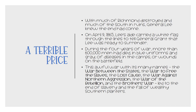With much of Richmond destroyed and much of the South in ruins, General Lee knew the end had come. So on April 9, 1865, Lee's aide carried a white flag through the lines to tell General Grant that Lee was ready to surrender. During the four years of war, more than 600,000 men had died, in blue uniforms and gray, of diseases in the camps or wounds on the battlefield. This awful war — with its many names: the War Between the States, the War to Free the Slaves, the Lost Cause, the War Against Northern Aggression, the War of the Rebellion, and the Brothers' War — led to the end of slavery and the fall of wealthy southern planters.